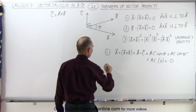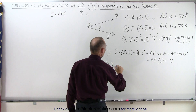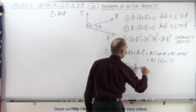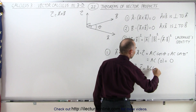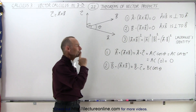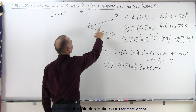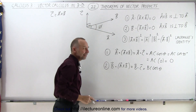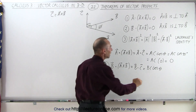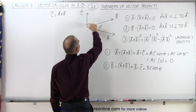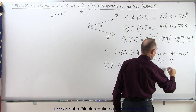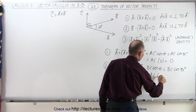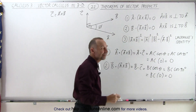Now for theorem two: vector b dotted with the cross product of a and b equals b · c, and this equals |b| times |c| times the cosine of the angle between them. Let's call that angle phi to avoid confusion with theta. Since the angle between b and c must be 90 degrees, this equals |b| times |c| times cosine of 90 degrees, which is zero — proving the second statement is true.